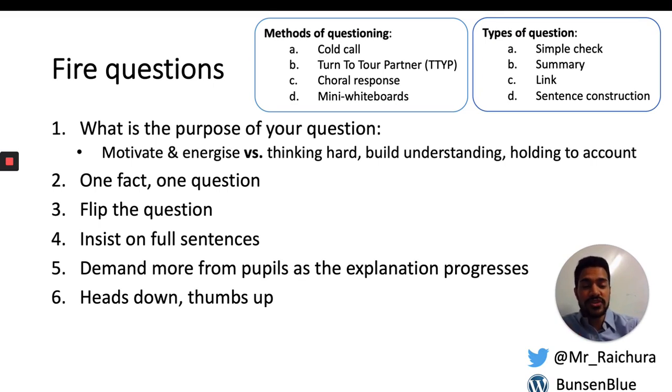And finally, it's always best to pose a question, pause, and then cold call with someone's name. If you do it the other way around and you say, Shawnee, tell me what are the group one metals known as, everyone else can basically switch off at that point because they know only Shawnee is going to be asked. So it's best to flip it around and hold pupils, get them on the edge of their seats thinking, am I going to be asked? I need to make sure I'm listening.